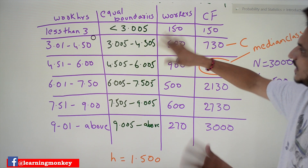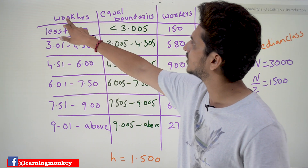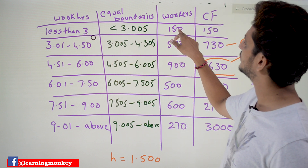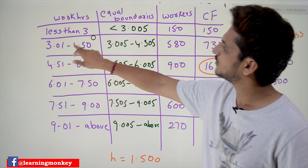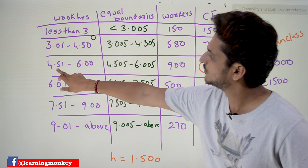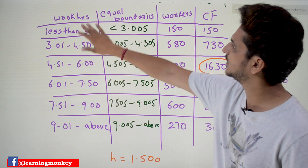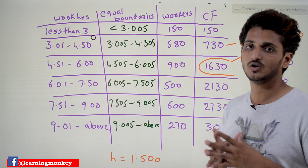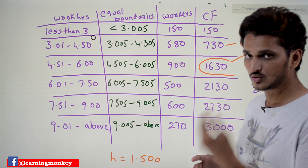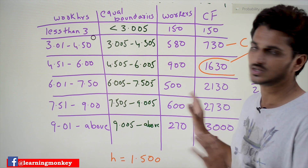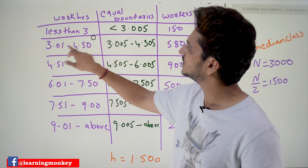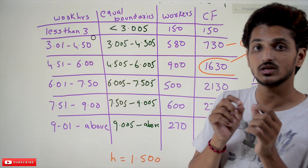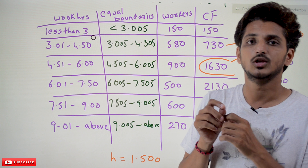If you place it in table form, the columns are: work hours and number of employees. Work hours less than 3, then 3.01 to 4.50, then 4.51 to 6, and so on. From the question we get these two columns. One important point to understand — this is not continuous; there is a gap between 3 and 3.01.